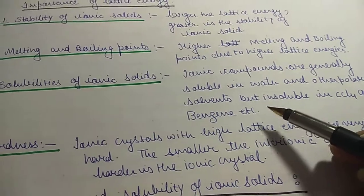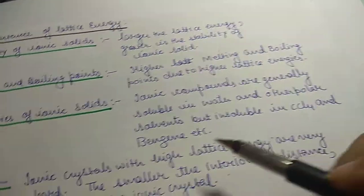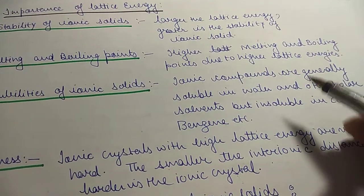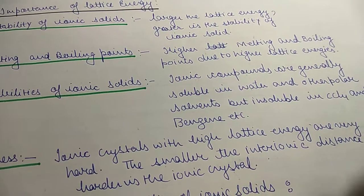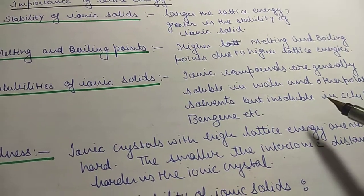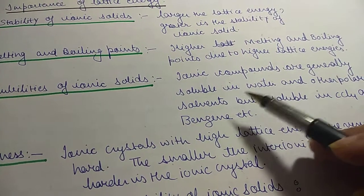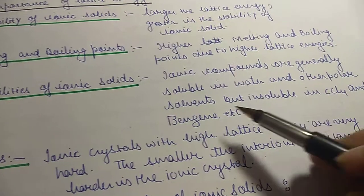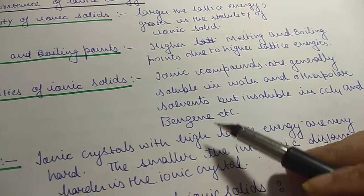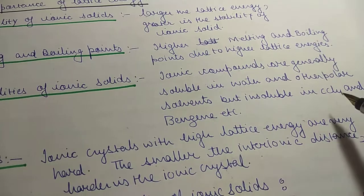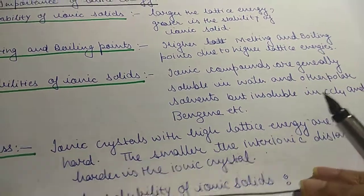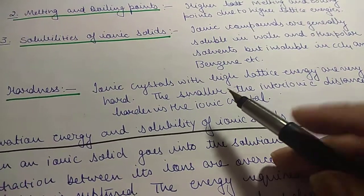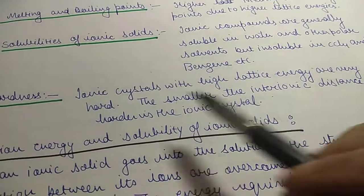Ionic compounds are insoluble in CCl4 and benzene because 'like dissolves like' — polar compounds dissolve in polar solvents. Therefore ionic compounds are soluble in water but not in CCl4 and benzene, because those are non-polar compounds.